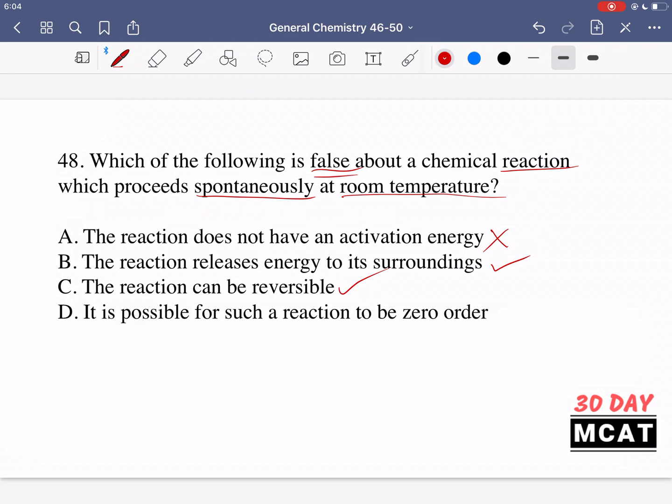Option D is saying it is possible for such a reaction to be zero order. Just like with C, yeah this is something which is possible. Zero order is telling us about the rate of the reaction. The order specifically is telling us is it just one reactant involved, is it multiple reactants involved in determining the rate or in the rate limiting step. In this case it's zero order so none of the reactants are involved? It's possible.